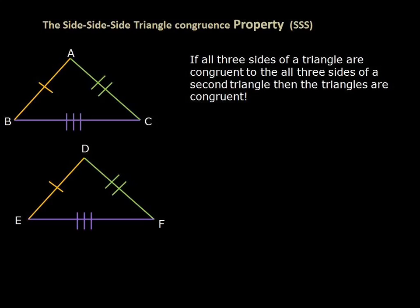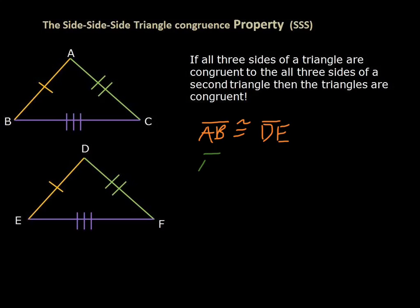Here's how I want you to write this out on your assignments. First, we say that segment AB is congruent to segment DE. Then we say that segment AC is congruent to segment DF. And we also say that segment BC is congruent to segment EF.